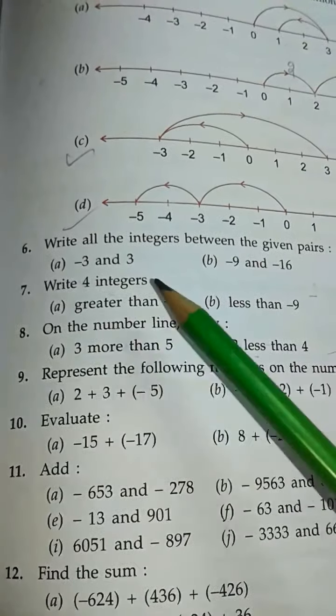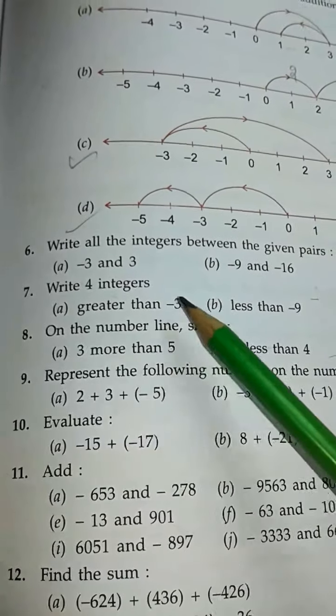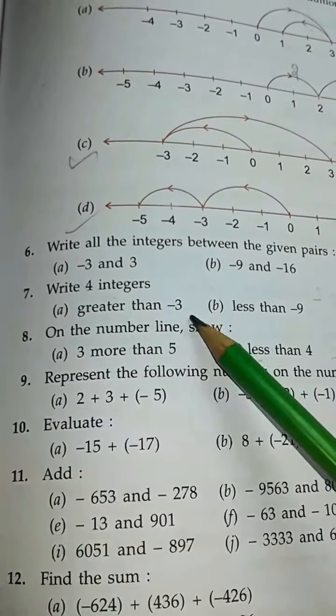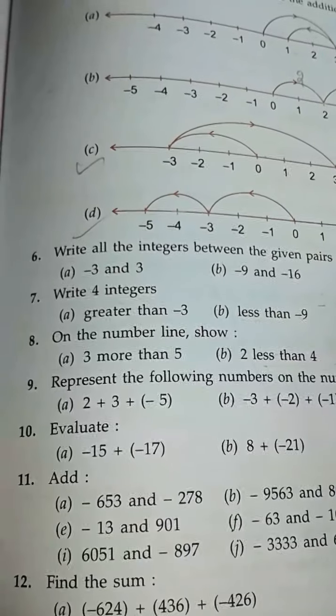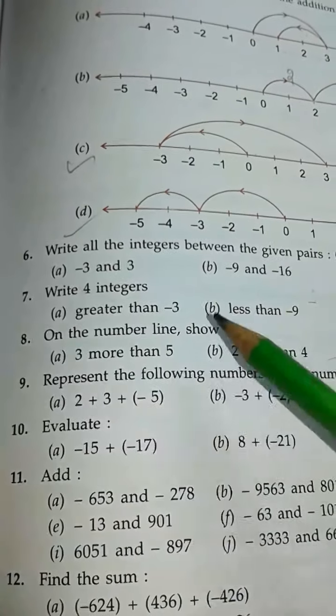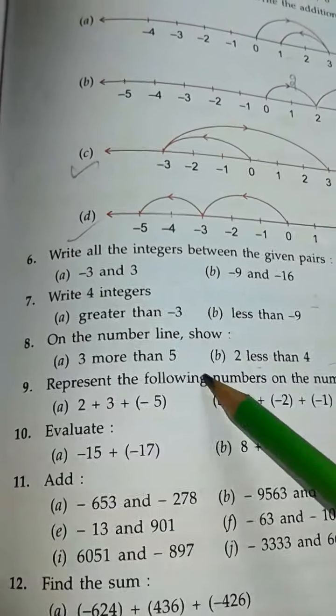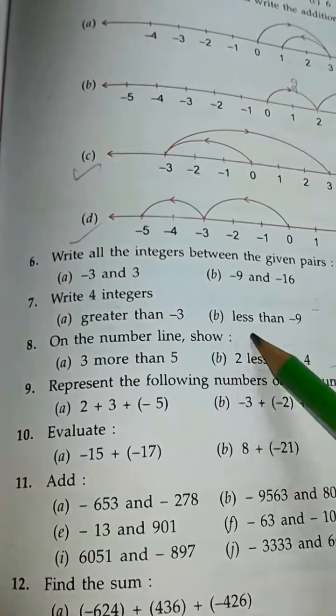Question 7: write 4 integers greater than minus 3. Greater than minus 3 means you can write minus 2, minus 1, 0, 1, 2, 3, etc. Like this you can write any 4 integers. Part B, you do yourself.